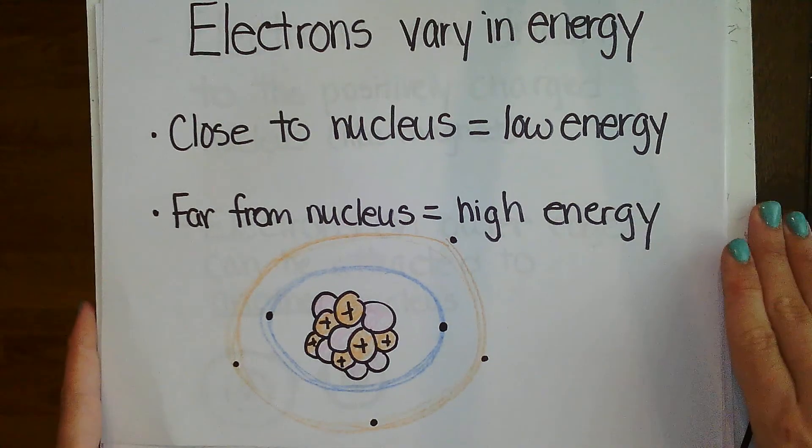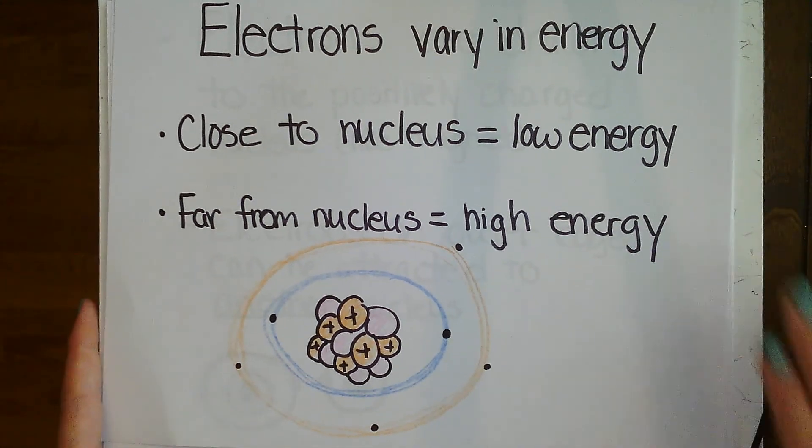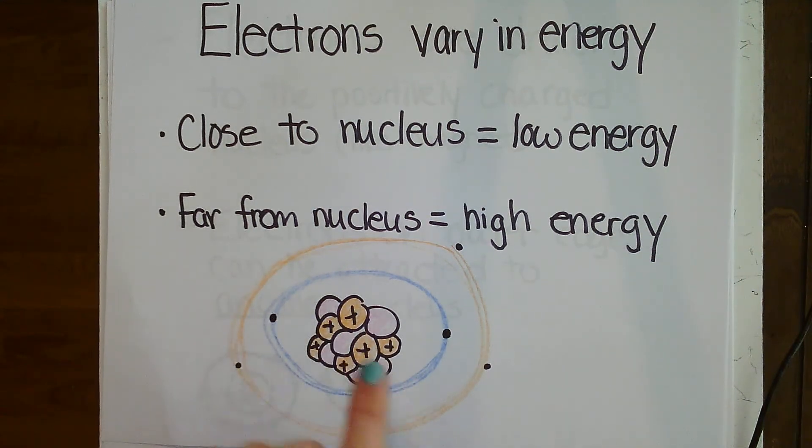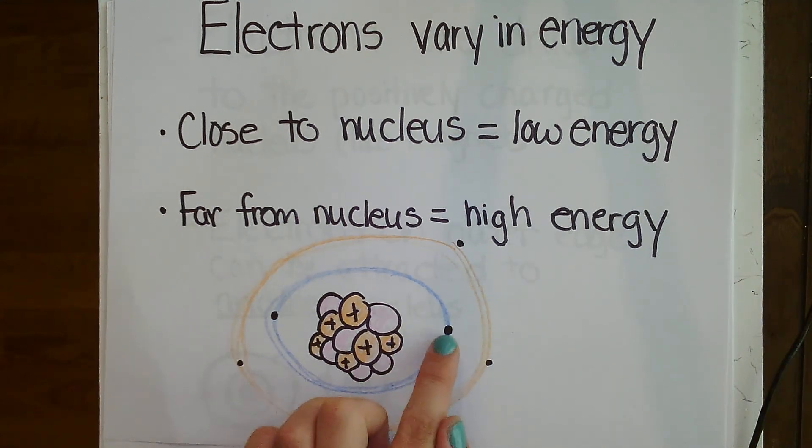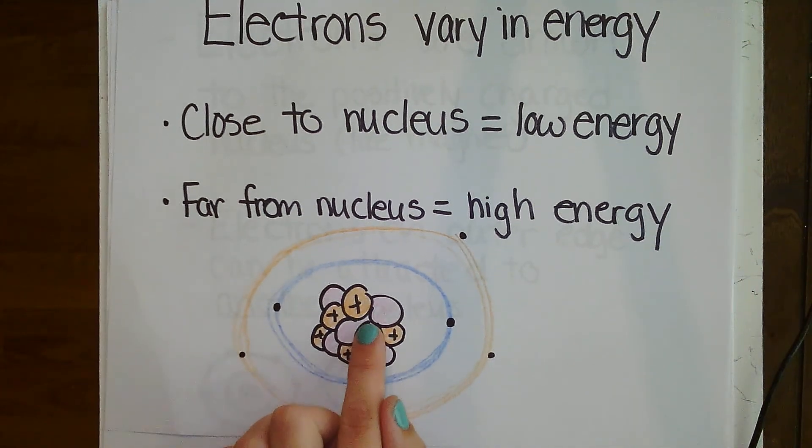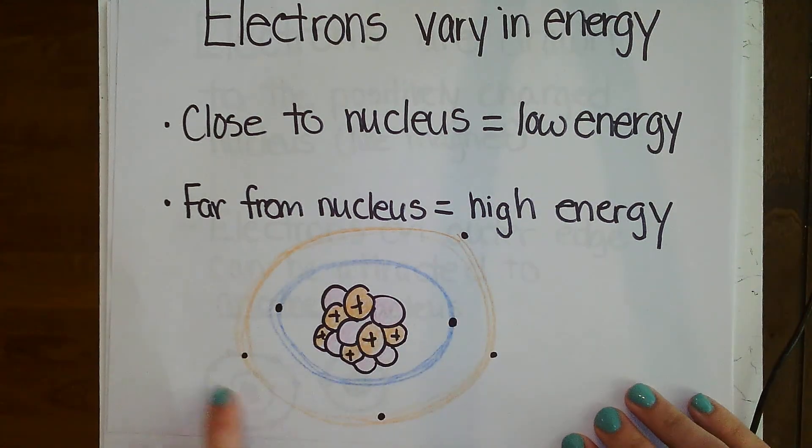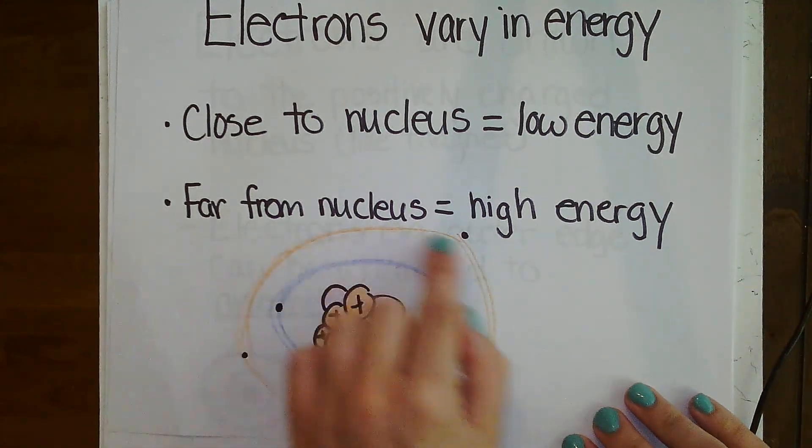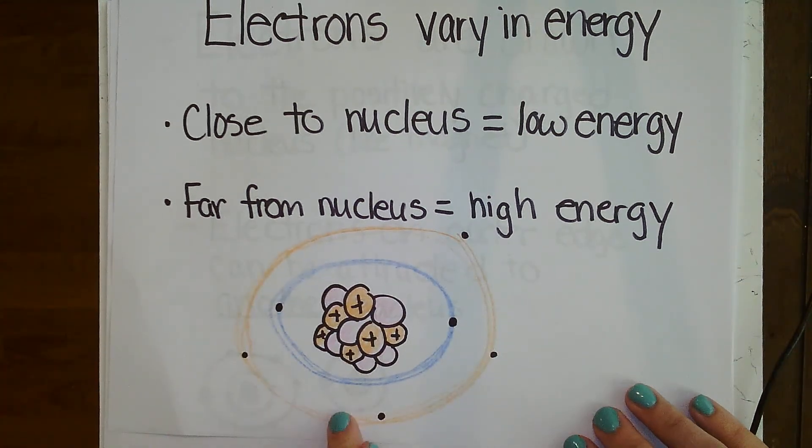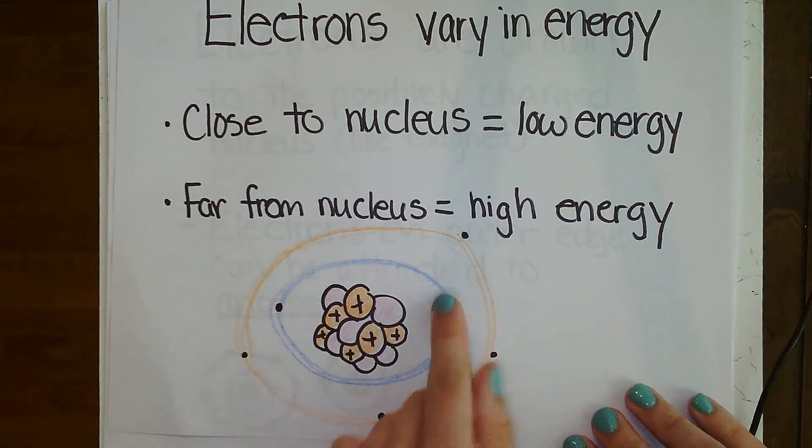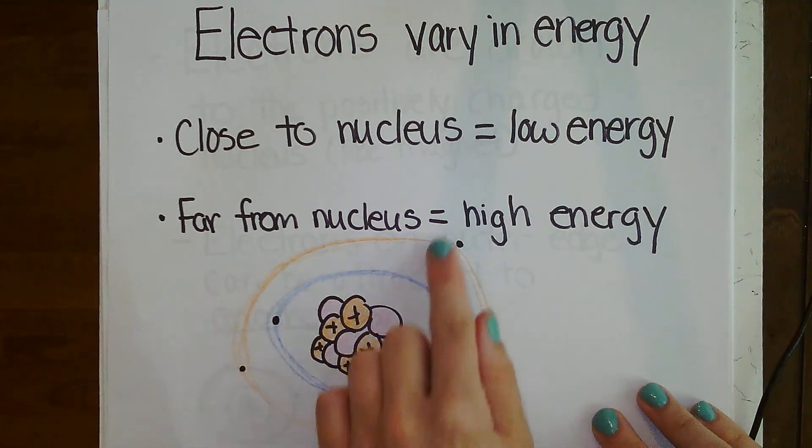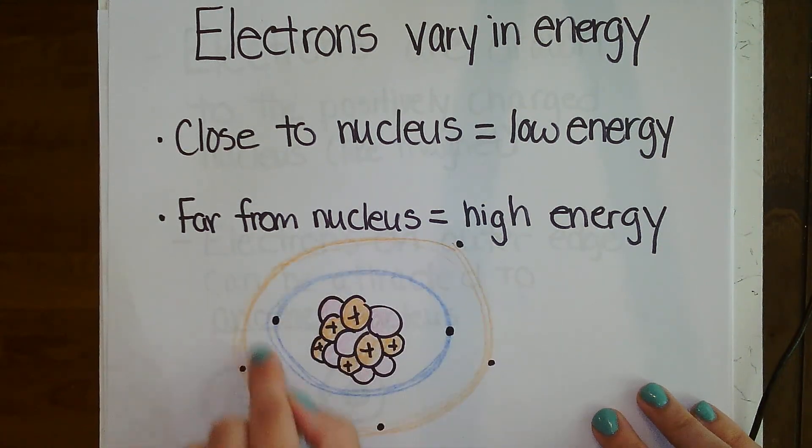When we talk about electrons, electrons vary in energy. Electrons close to the nucleus, in this ring right here, have lower energy. They are more drawn to the positive protons in their own nucleus. But electrons on the outer ring, farther from the nucleus, have higher energy. They're moving more, and they are more easily attracted to other atoms. We'll talk about that in just a moment. Remember, closer equals lower energy. Farther equals higher energy.